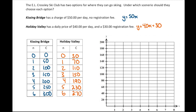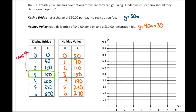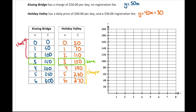From the table we can determine when one option is better than the other. We can see that Kissing Bridge is cheaper up to three days. At three days, the cost is the same — $150 — for both locations. After three days, Holiday Valley is cheaper. So from the table: if you go anywhere from zero to three days, go to Kissing Bridge; if you go exactly three days, it doesn't matter; and if you go more than three days, go to Holiday Valley.